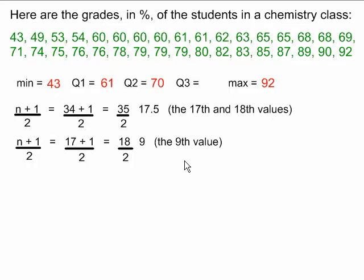We can use the same formula over again to find the median of the second half of the data, which is this bottom line. It's still 17 values, and 17 plus 1 over 2 still gives us 18 over 2, the 9th value. So counting, we get 1, 2, 3, 4, 5, 6, 7, 8, 9. This last of the 79's is our 9th value. Q3 is therefore 79.